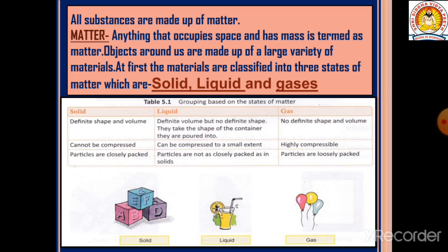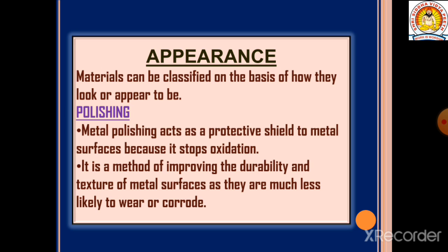I hope you all understood the details about solids, liquids, and gases. Now, the first property we are going to study in detail is appearance — how the materials or objects look. Materials can be classified on the basis of how they look or appear.